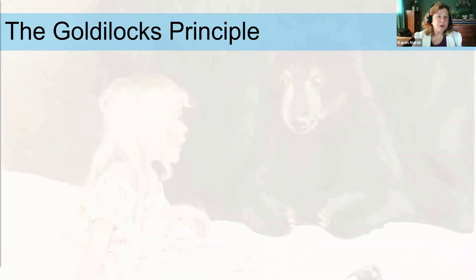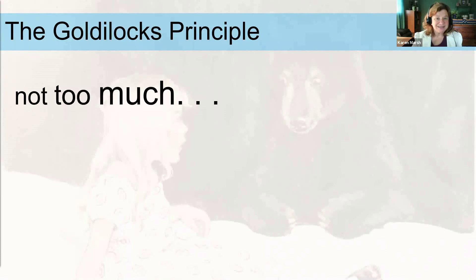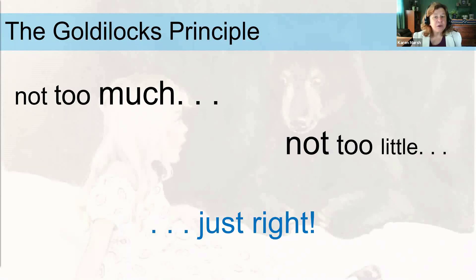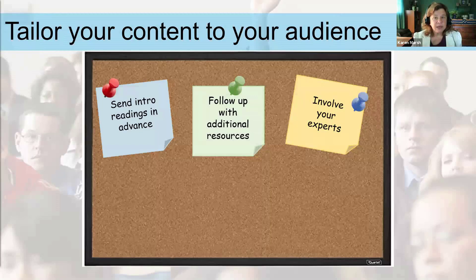If you have a mixed audience where some know a lot and some know a little, use the Goldilocks principle — not too much, not too little, but just right. If you level your content too high, novices will be confused, and if you're too basic, you'll lose your experts' interest, so shoot for the just right middle range.